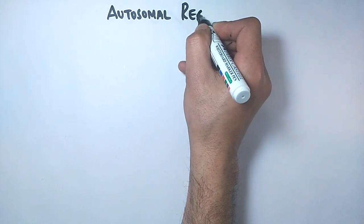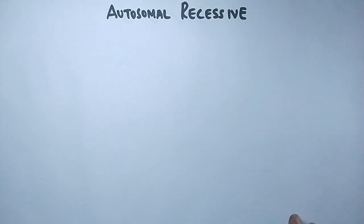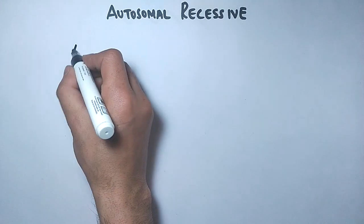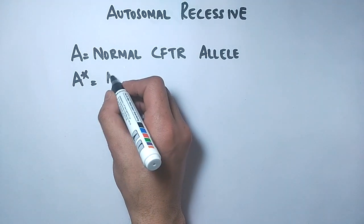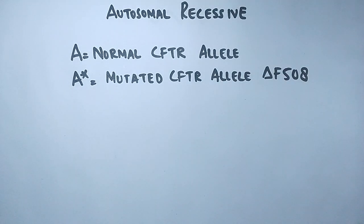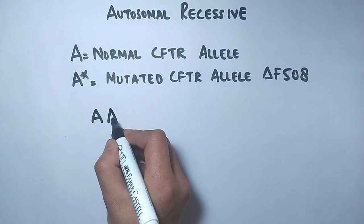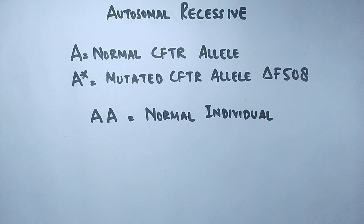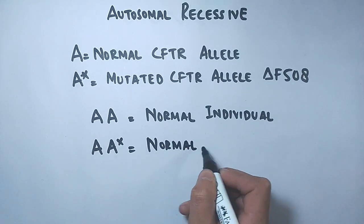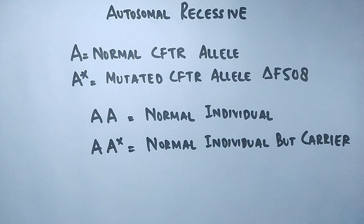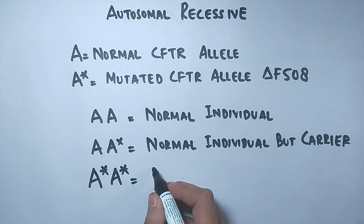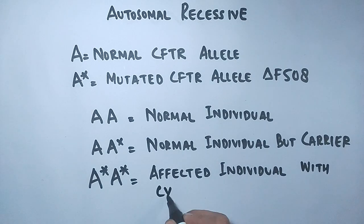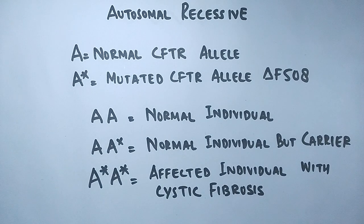Now let's look at the genetics of cystic fibrosis. As an autosomal recessive disorder, an individual must have two mutated copies of the same allele to express the disease. Let capital A denote the normal CFTR allele and A* the mutated allele. An AA individual is normal; an AA* individual is normal but a carrier; and an A*A* individual is affected with cystic fibrosis.